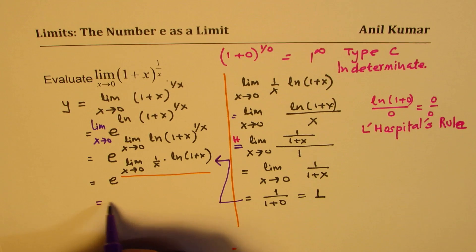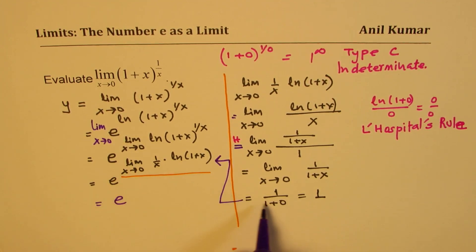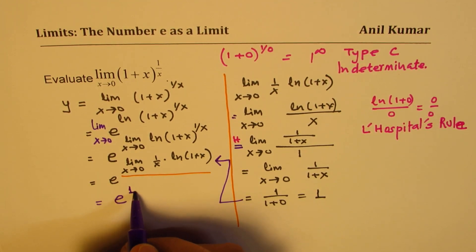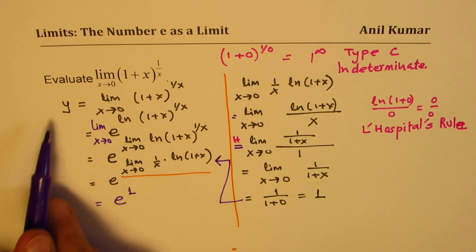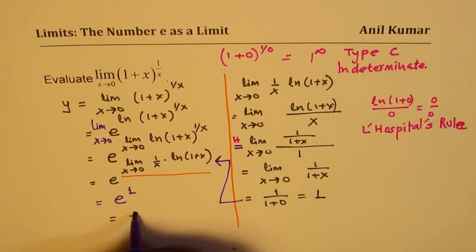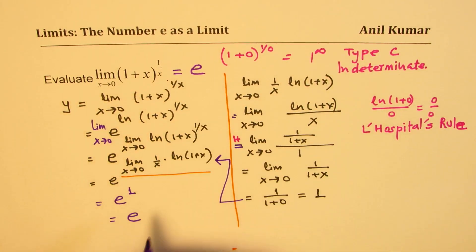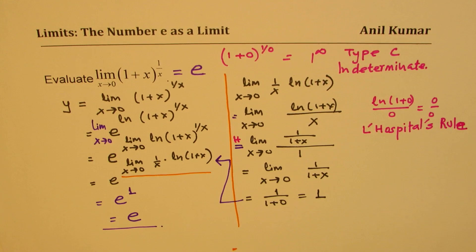So we get e to the power of this whole limit, which we just found to be 1. Therefore, y equals e to the power of 1, which is e. This limit is e. That is how you could actually find the limit using L'Hôpital's rule.